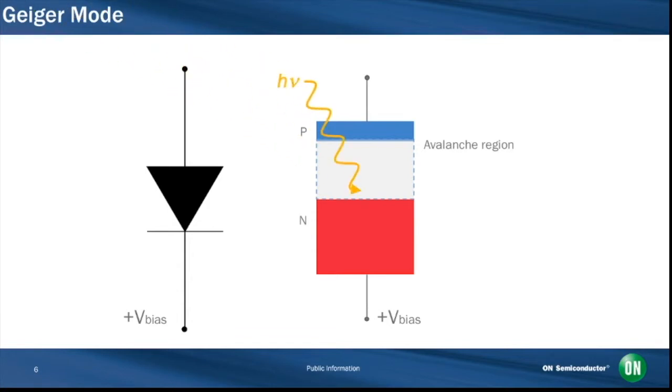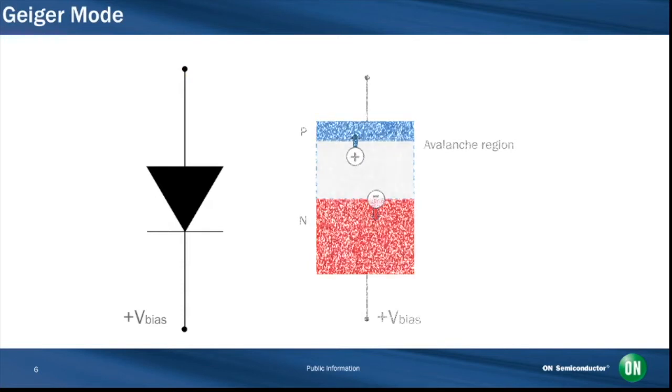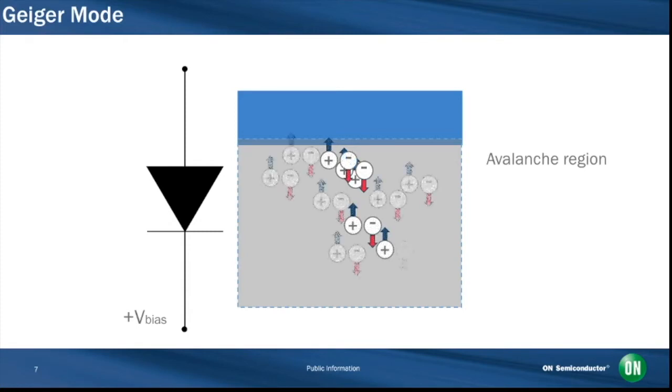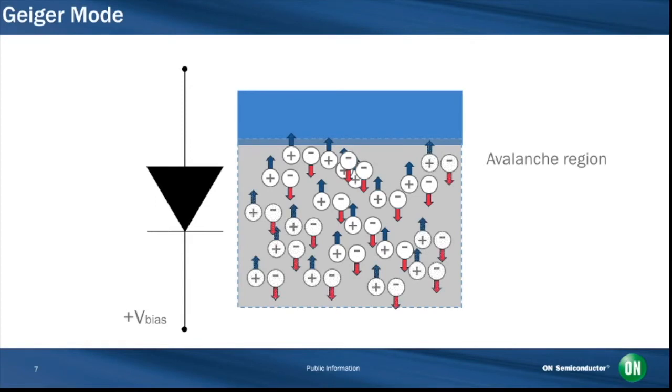Any charge carriers in this region will now be accelerated to such an extent that they will generate secondary charge pairs through impact ionization. Each of these new charge carriers will also generate further ionization, creating a self-perpetuating ionization avalanche that spreads throughout the silicon volume subjected to the electric field. The silicon will break down and become conductive, effectively amplifying the original electron hole pair into a macroscopic current flow.